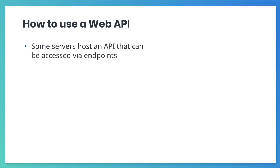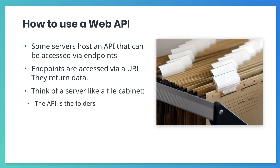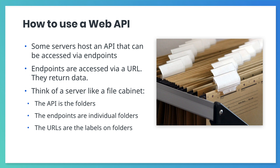Some servers host an application programming interface, commonly known as an API, that can be accessed via endpoints. Each endpoint is addressed with a unique URL and returns a different collection of data. Another way to think about how servers work is to think of the server as a file cabinet, where the API collectively represents all the folders in the cabinet. Each endpoint represents an individual folder in the file cabinet, and the URLs are the labels on the folders. The URLs help us locate the folders easily and retrieve the files. The files within each folder represent the data that the server returns. Each folder has different files, just as each endpoint returns different data.